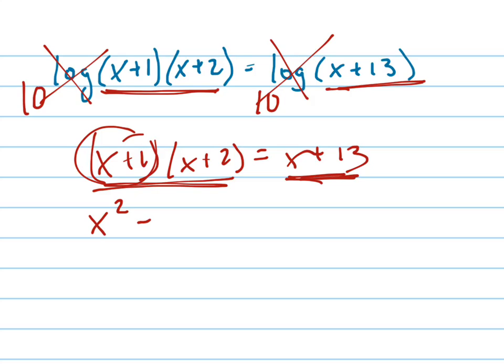It's going to be x squared plus 3x plus 2 equals x plus 13. I distribute that all. Now set it equal to zero. So that's going to be x squared plus 2x minus 11. Did I do that right? Yeah.